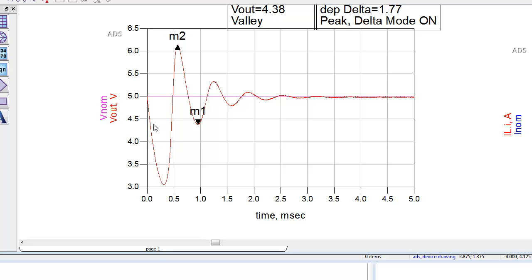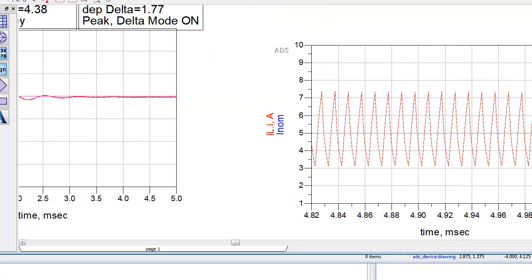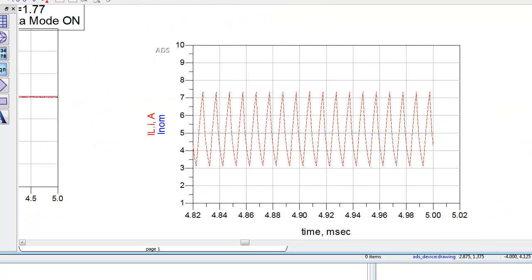Here we have this startup transient from the point of view of the output node. You can see there's some oscillation that damps down to some steady state voltage.